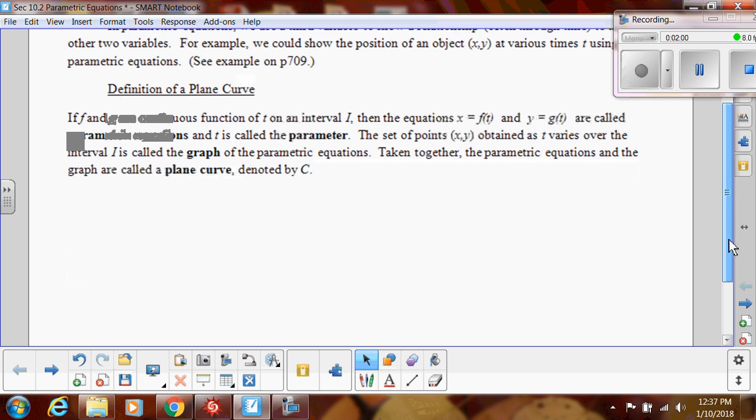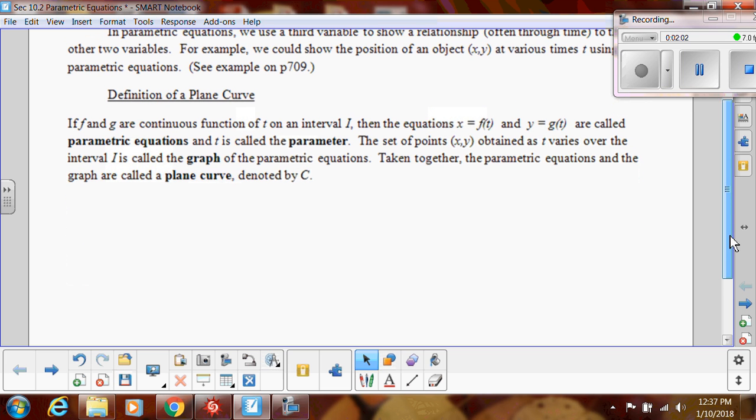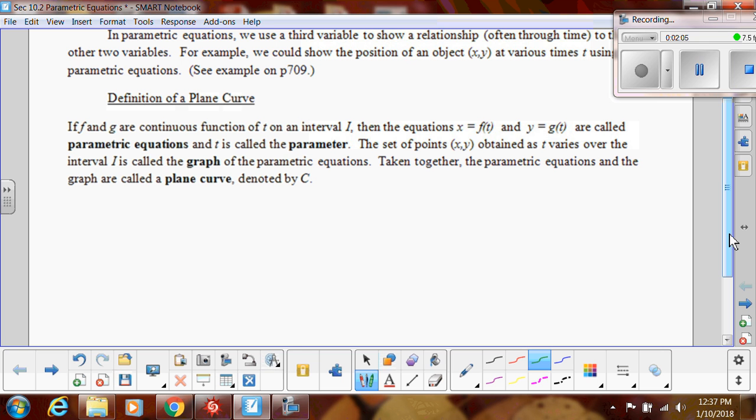So here's our definition. If f and g are continuous functions of t on an interval, then these are your equations. So just like those two equations you just saw, those are called parametric equations. t is the parameter. And the set of points (x, y) that we get from if we plug in t is called the graph of the parametric equations. So that parabola that you saw. And then if we take together the parametric equations and the graph, then that's called a plane curve.